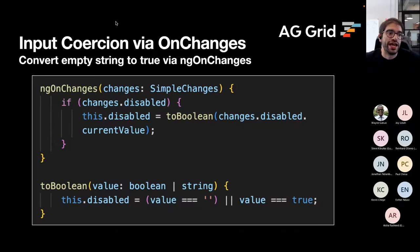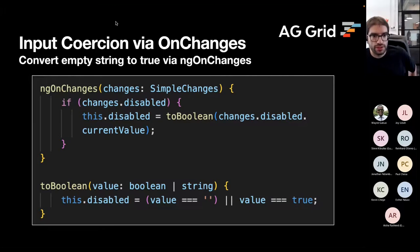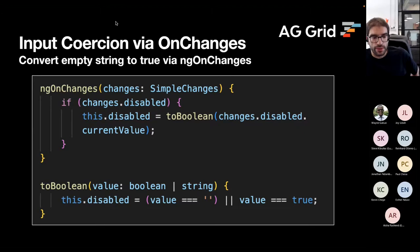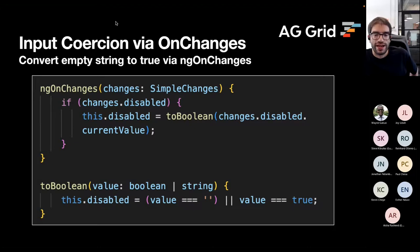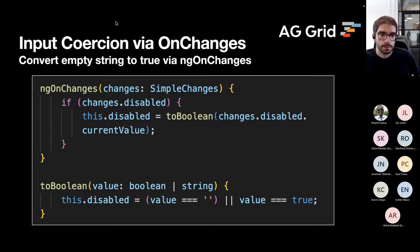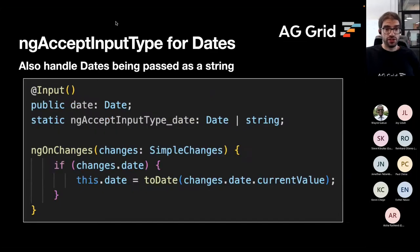We handle the conversion in ngOnChanges. When changes arrive for disabled, we have a coercion function, toBoolean, which takes the current value — which we know to be either a boolean or an empty string — and sets disabled to true if the value is exactly the empty string or is true. This way we've enabled people to use the plain attribute instead of always having to specify the full square bracket binding.